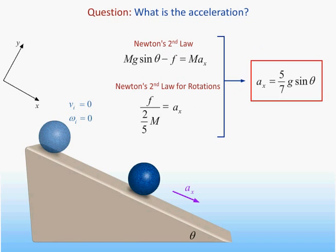We find that the acceleration of the center of mass is smaller than that of an object sliding down a frictionless ramp inclined at the same angle, which is equal to g sin θ.